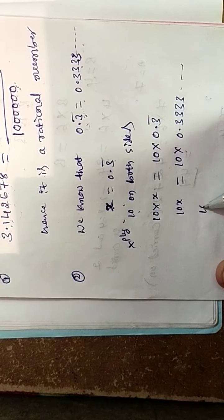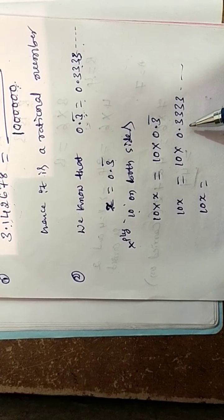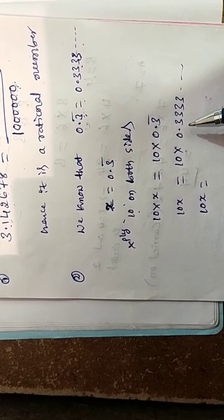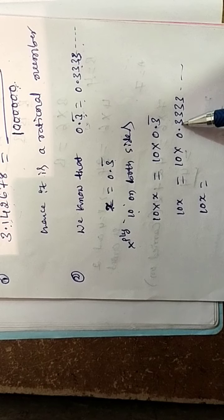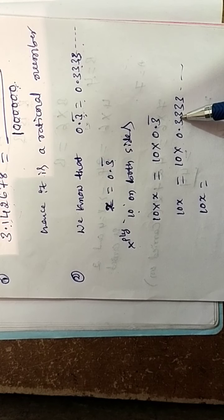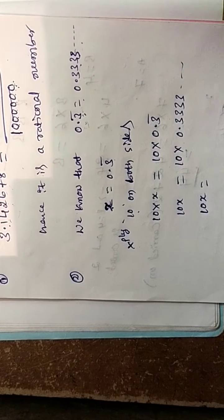So 10x is equal to — when we multiply 0.333... by 10, the decimal point shifts one place to the right — so we get 3.333...